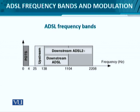The frequency band has actually been extended — in fact, it has been doubled from 1104 to 2208 kHz. Keeping the same modulation scheme of Discrete Multi-Tone, we therefore expect double the bandwidth or double the data rate for ADSL2 and ADSL2 Plus downstream transmissions.